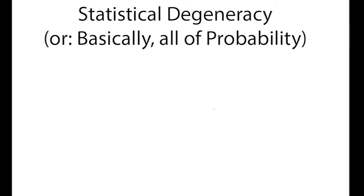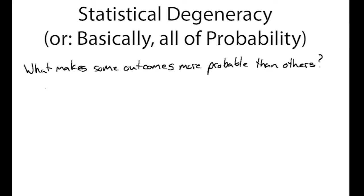Welcome to this video on statistical degeneracy — or, tongue-in-cheek, basically all of probability. Let me start with a question: what makes some outcomes more probable than others? And let me relate that to another question: where should you build your hotels in Monopoly?